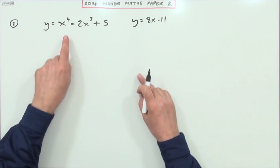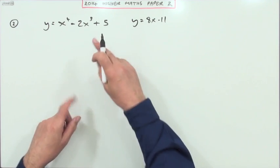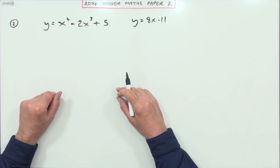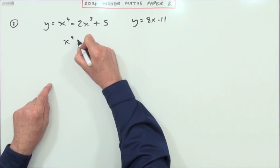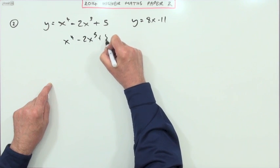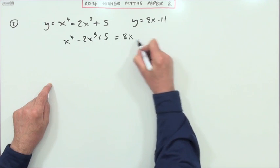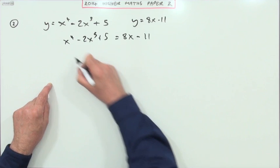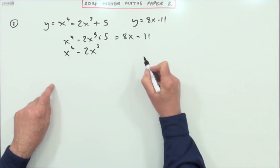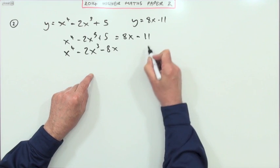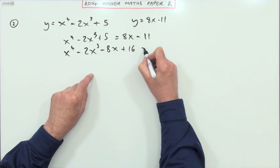How could I check if that was, in fact, a tangent to that? Well, substitute it in, and see if you get a pair of equal roots from it. So, x to the 4 minus 2x cubed plus 5 equals 8x minus 11 would give you x to the 4 minus 2x cubed minus 8x plus 16 equals 0.